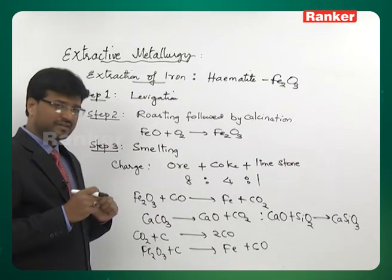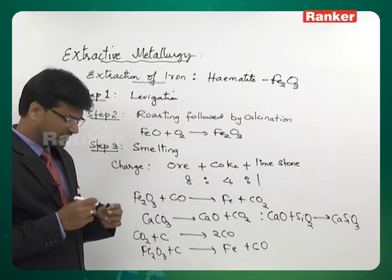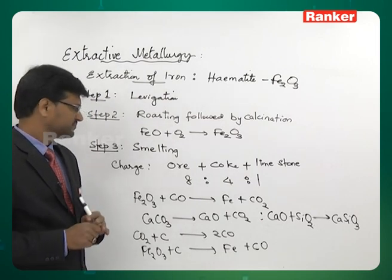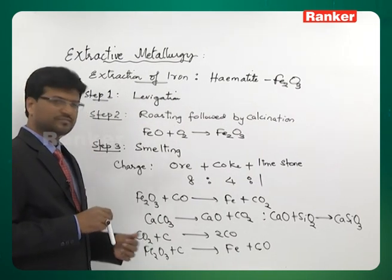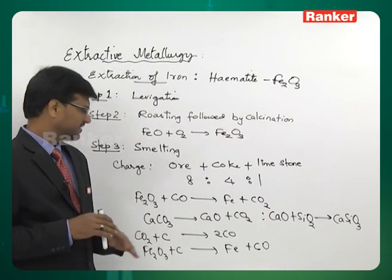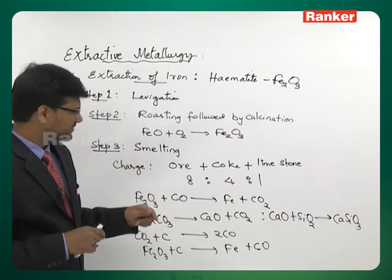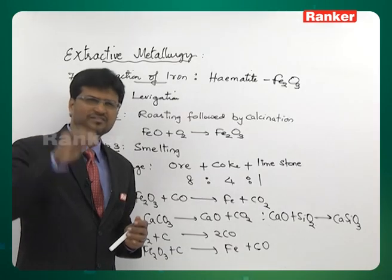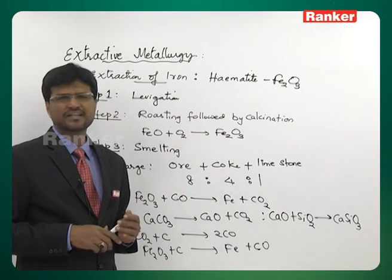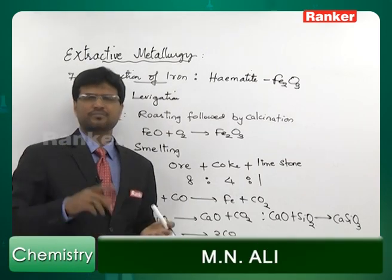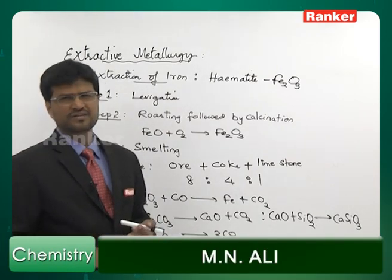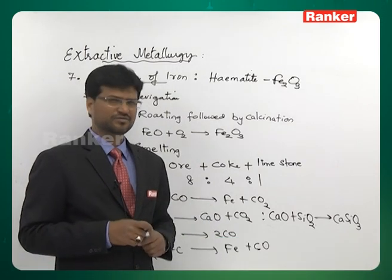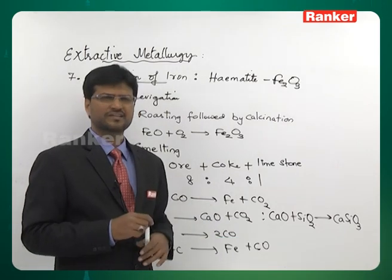There are two reducing agents in the blast furnace: coke itself and carbon monoxide. The role of limestone is to decompose and produce calcium oxide, which is more basic than ferric oxide. Calcium oxide therefore combines with silica to give calcium silicate. In the presence of calcium oxide, iron oxide does not combine with SiO2, because calcium oxide is more basic than iron oxide.